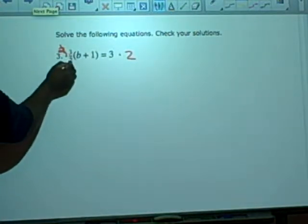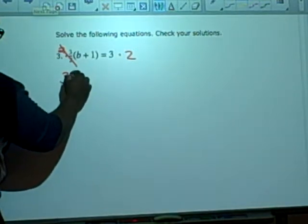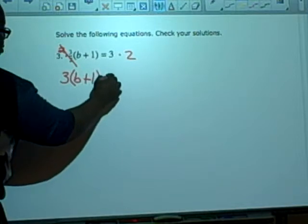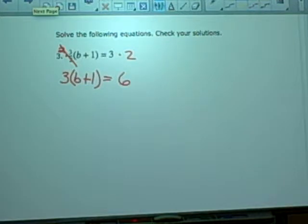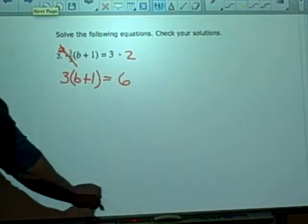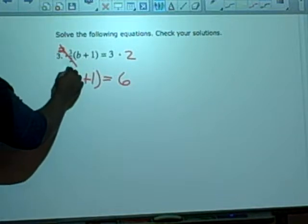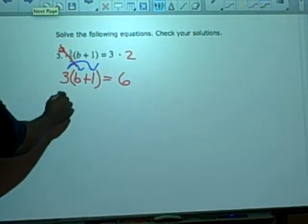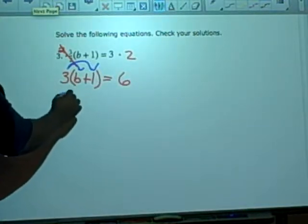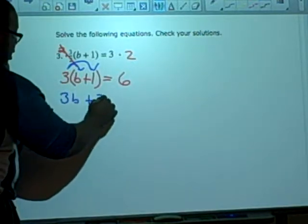Once I do that, these cancel and I have three B or three parenthesis B plus one equals three times two which is six. At this point, I'm ready to rock and roll. I'm ready to go through my six steps. Step one asks us to do what? Parenthesis. And I need to distribute. What is three times B and what is three times one? Three times B is three B. Three times positive one is three. Plus three.